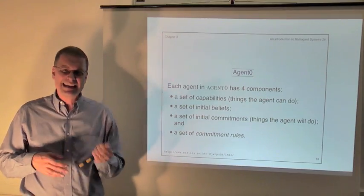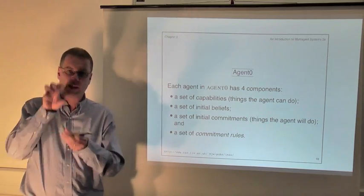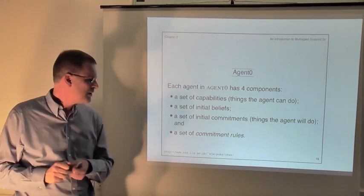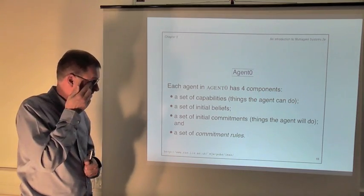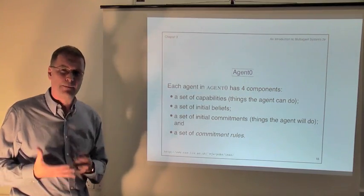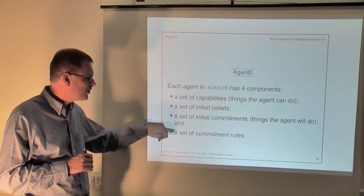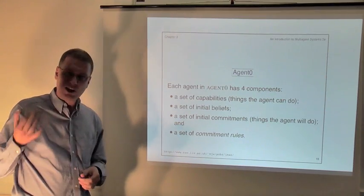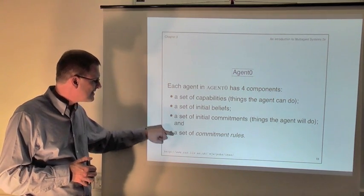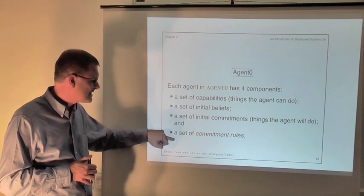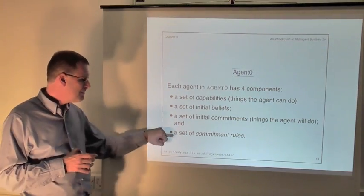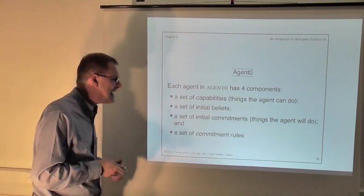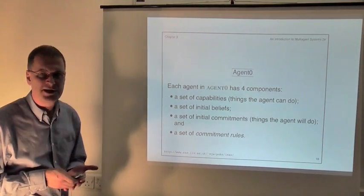Next, the agent has a set of what are called commitments — things that the agent will do. In Agent Zero, commitments roughly take the form of a schedule: at this particular time, do this particular action. Initially an agent starts off with a bunch of these commitments telling it what it's initially committed to doing. Finally, the program part of an agent is encoded in what are called commitment rules, which tell the agent how to generate new commitments.